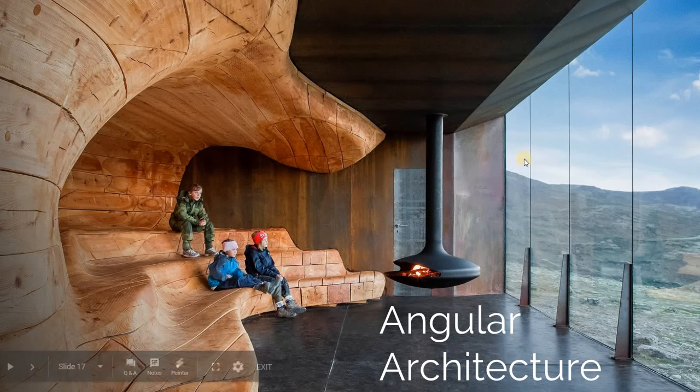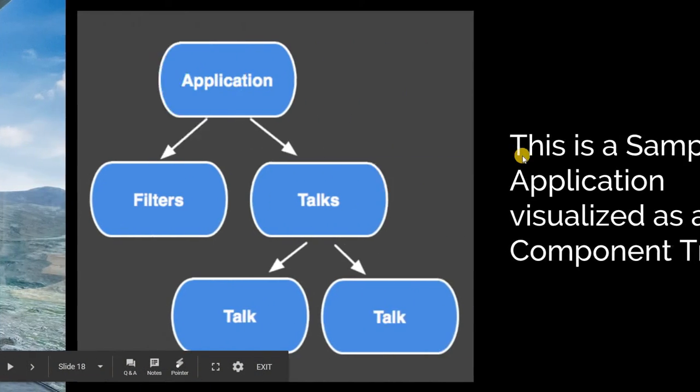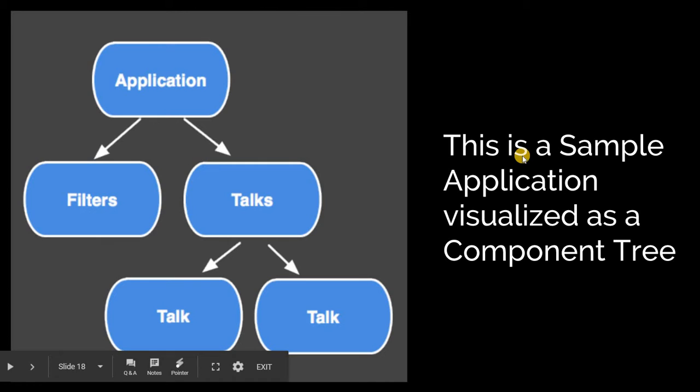Any Angular application can be visualized as a tree of components. Suppose there was an application for, say, Technical Talks. The application would have a root component inside which there would be two views: Filters and Talks — two separate components, with Filters giving you the ability to filter out any specific genre or type of technical talks that you want to watch.